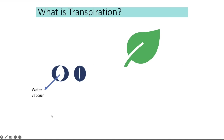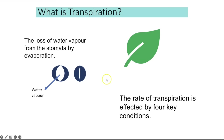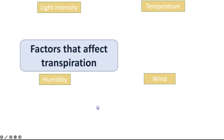Transpiration is when water vapour is lost from a leaf via the stomata — the evaporation of water vapour from the stomata. The rate of transpiration is affected by different conditions, and to measure changes in rate you would use a piece of apparatus called a potometer. Higher light intensity causes the stomata to open more, providing a larger surface area for evaporation. Higher temperature gives water molecules more kinetic energy and increases evaporation.